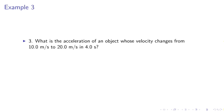Example 3, what is the acceleration of an object whose velocity changes from 10.0 meters per second to 20.0 meters per second in 4.0 seconds? Use the formula a equals vf minus vi or tf minus ti equals 20 minus 10 meters divided by 4.0 seconds. It gives us 2.5 meters per second.